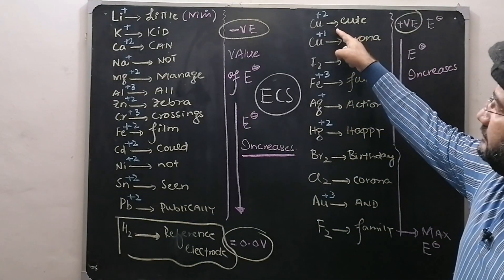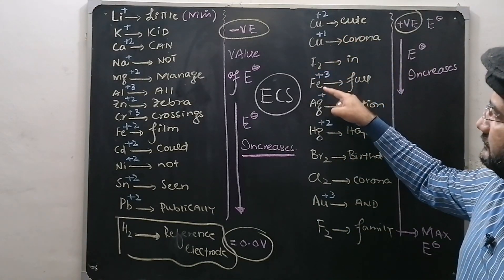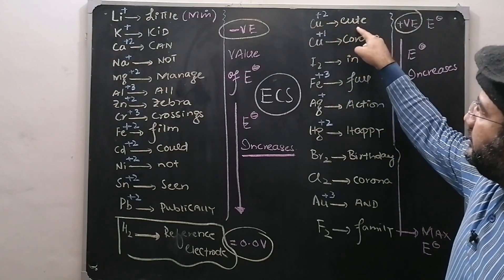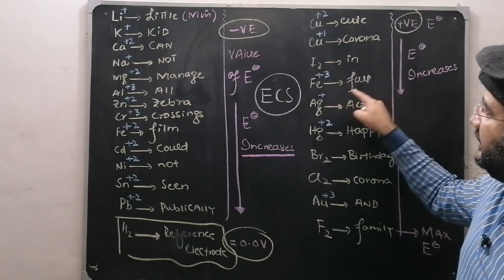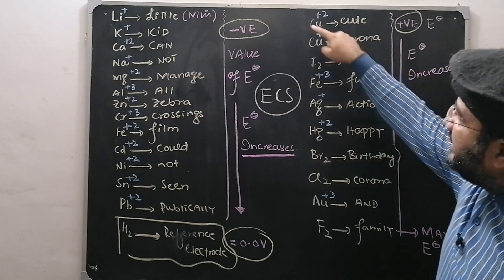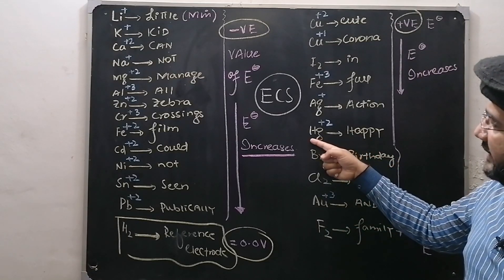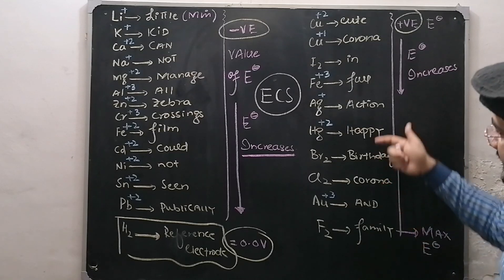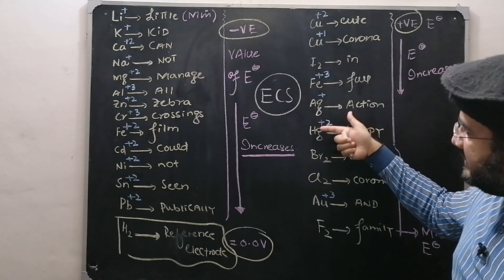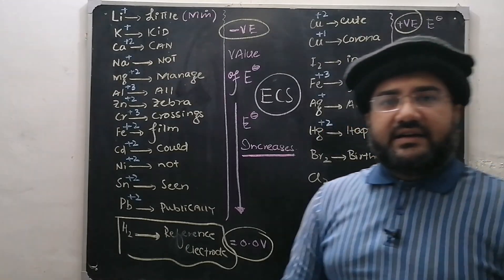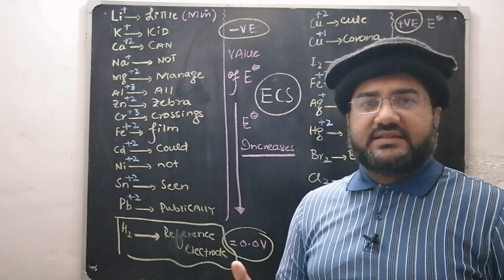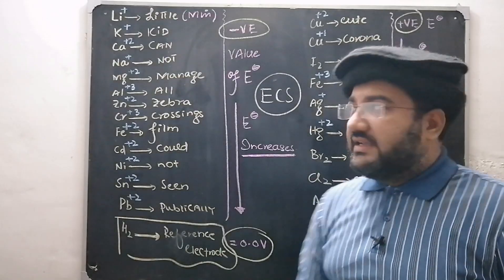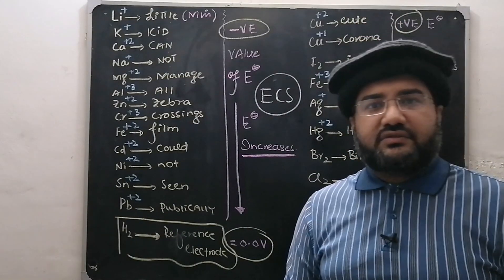All elements from lithium to lead lie above the SHE in the electrochemical series with negative standard reduction potentials. The next portion covers elements with positive standard reduction potential that lie below the SHE. From Cu²⁺ to Ag⁺, I use the sentence 'Cute corona in full action' to memorize those elements. From Hg²⁺ to F₂, the sentence 'Happy birthday corona and family' helps memorize the elements up to fluorine.